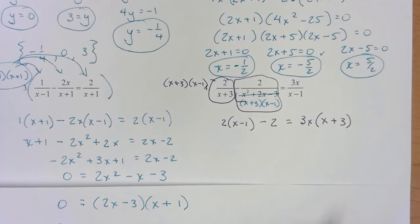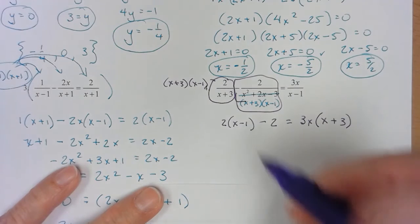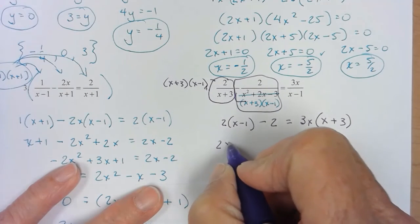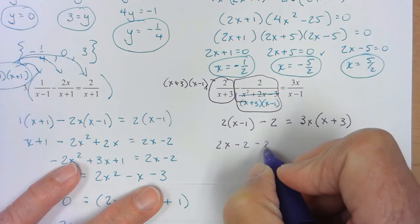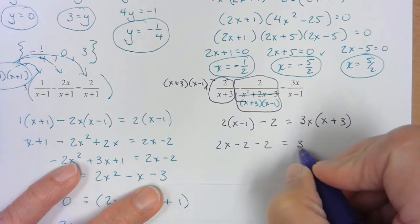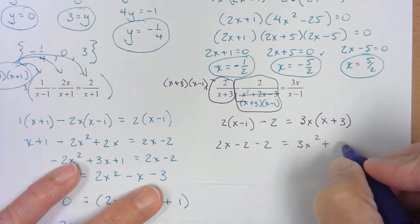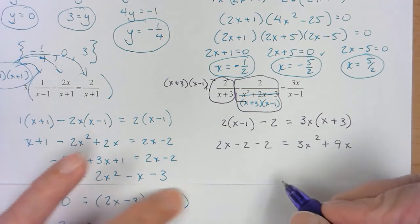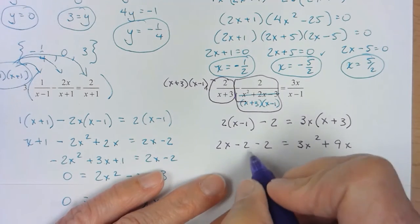So if you have fractions in an equation, clear them out first because it gets you back to something that you've done before. So let me multiply 2x minus 2. 3x squared plus 9x.